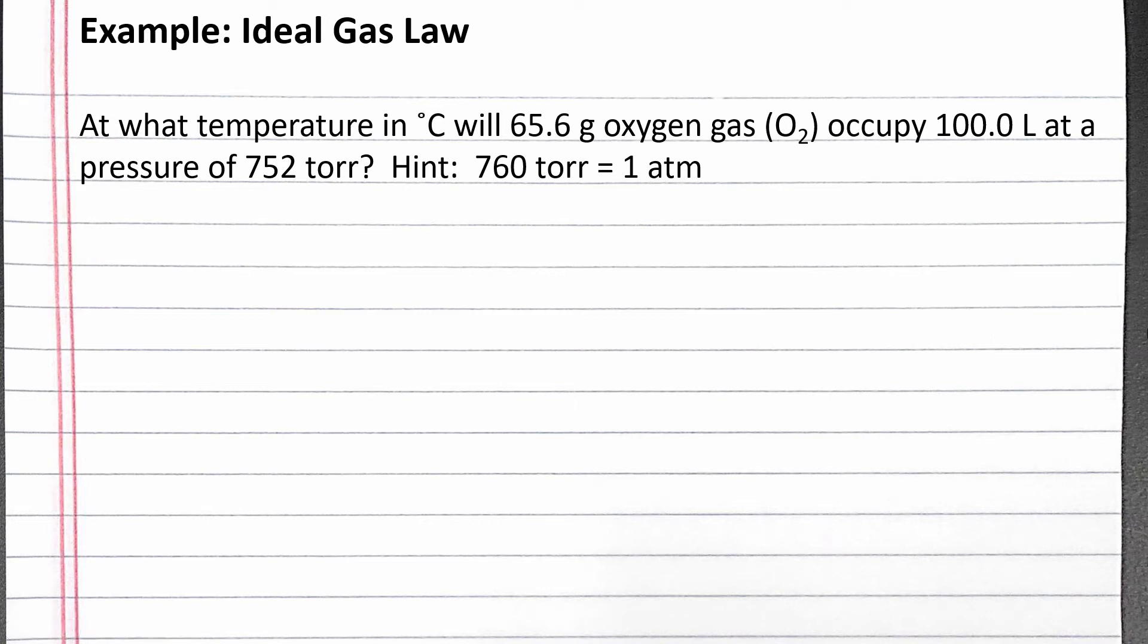In this example, we apply the ideal gas law. Our problem reads, at what temperature in degrees Celsius will 65.6 grams oxygen gas occupy 100.0 liters at a pressure of 752 torr?